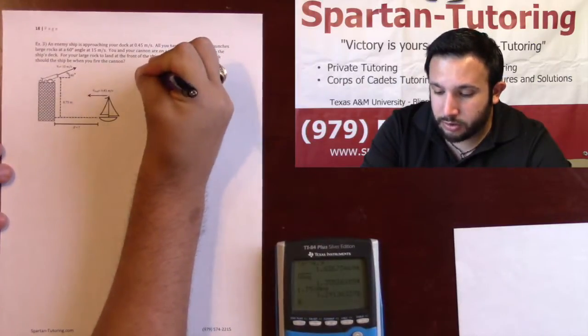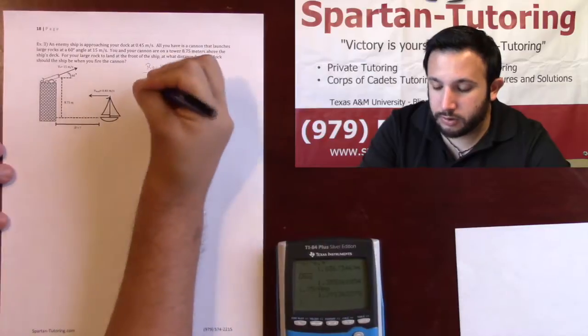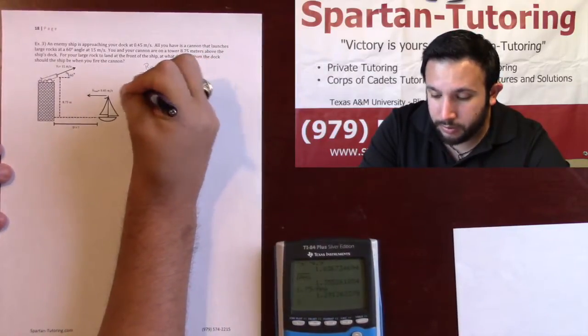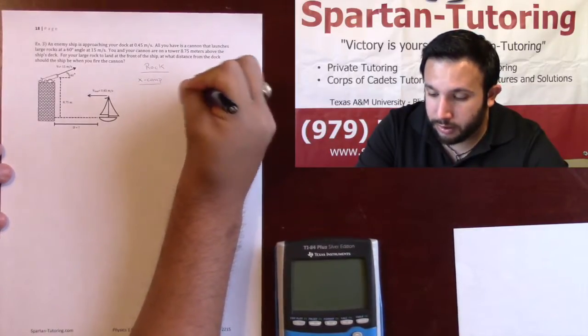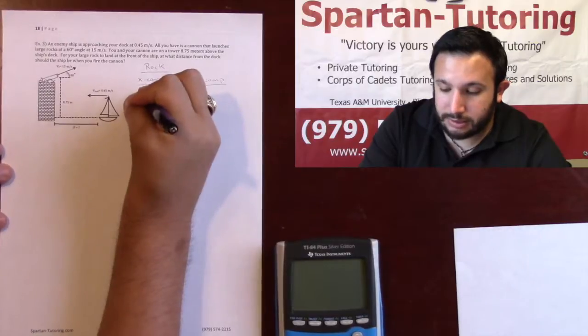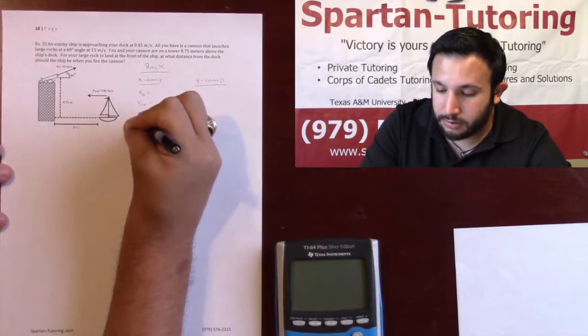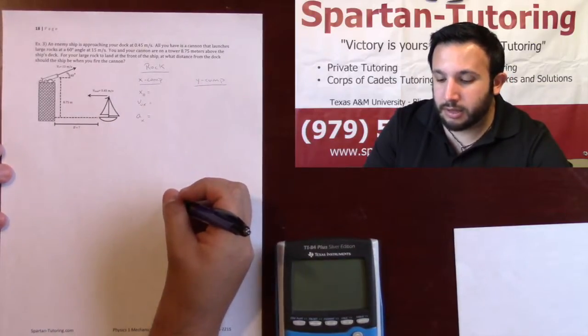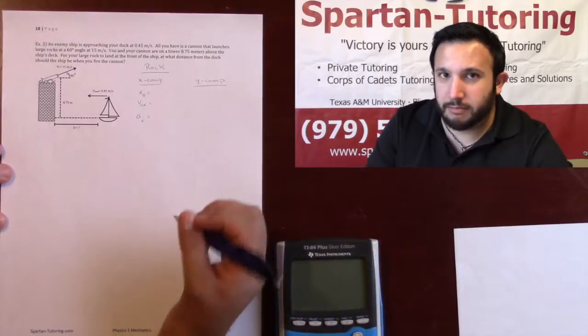Let's focus on the rock first. With the rock it's moving in both the x and the y direction, so we have to split up the x and the y components for that rock. Now I still need the x_0, v_0 in the x, and the a, and so forth. Everything's dependent on where you set up your origin.